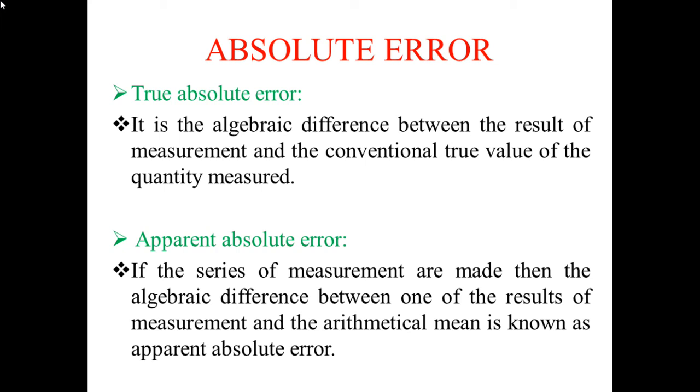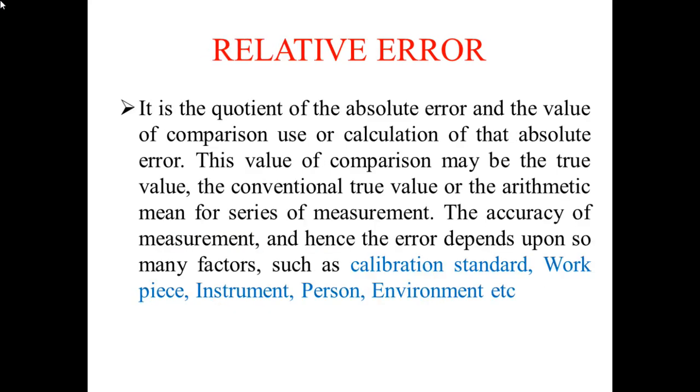Next is relative error. It is the quotient of the absolute error and the value of comparison used to calculate that absolute error. This value of comparison may be the true value, the conventional true value, or the arithmetic mean for a series of measurements. The accuracy of measurement, and hence the error, depends upon many factors such as calibration standard, workpiece, instrument, person, and environment.